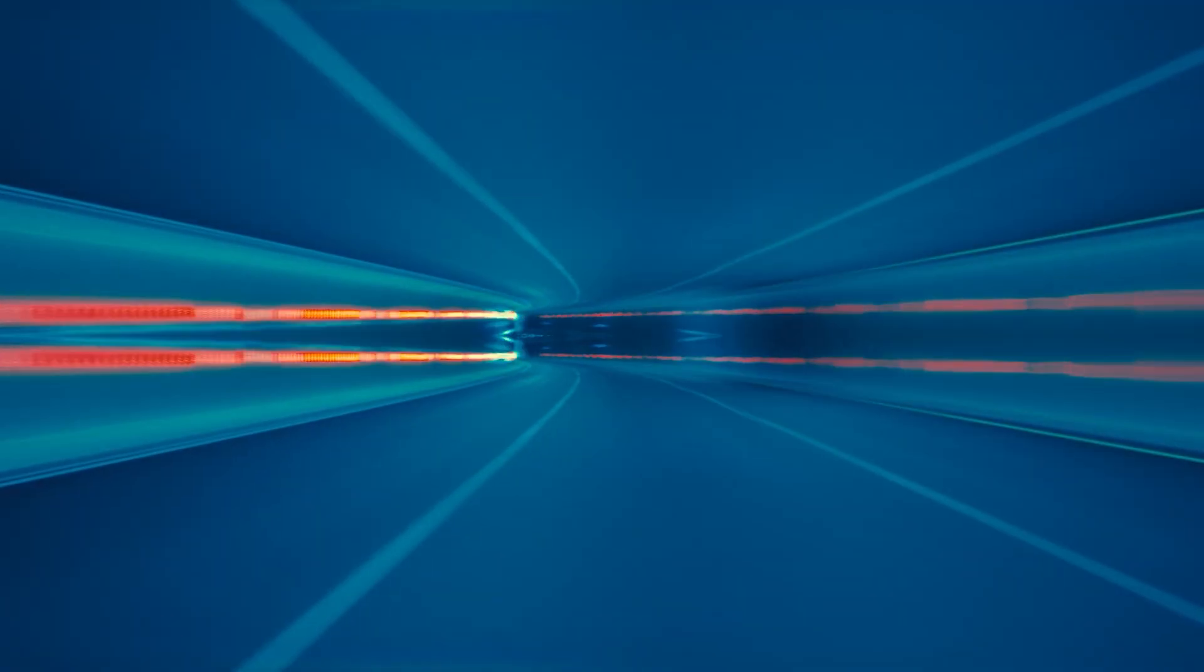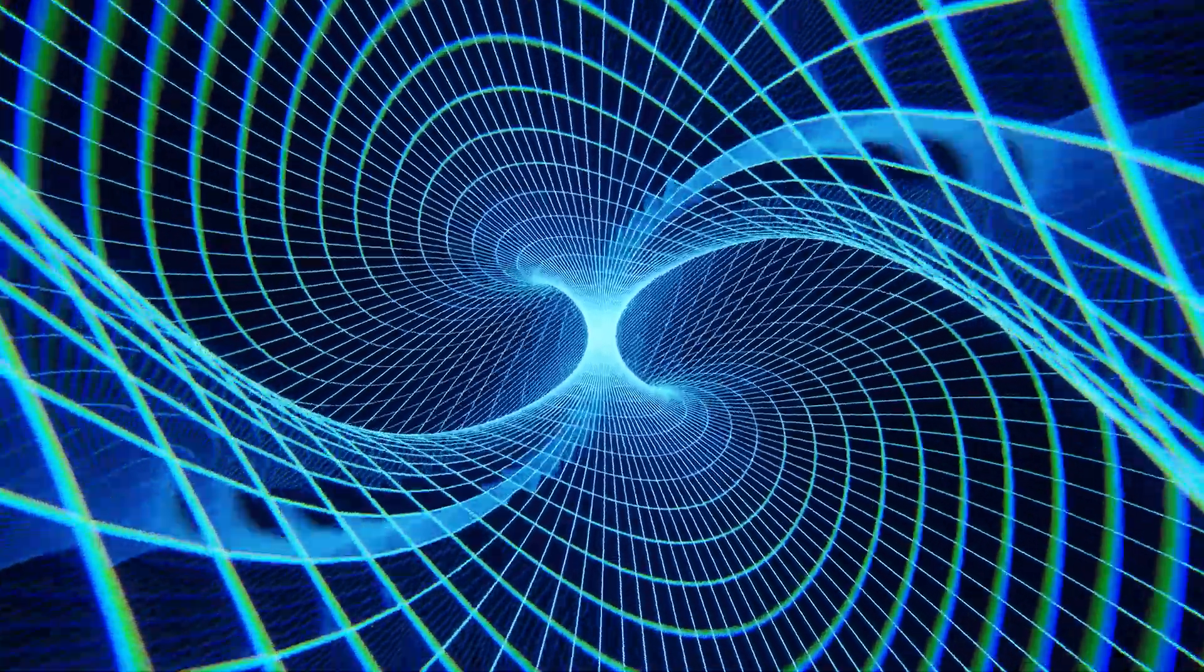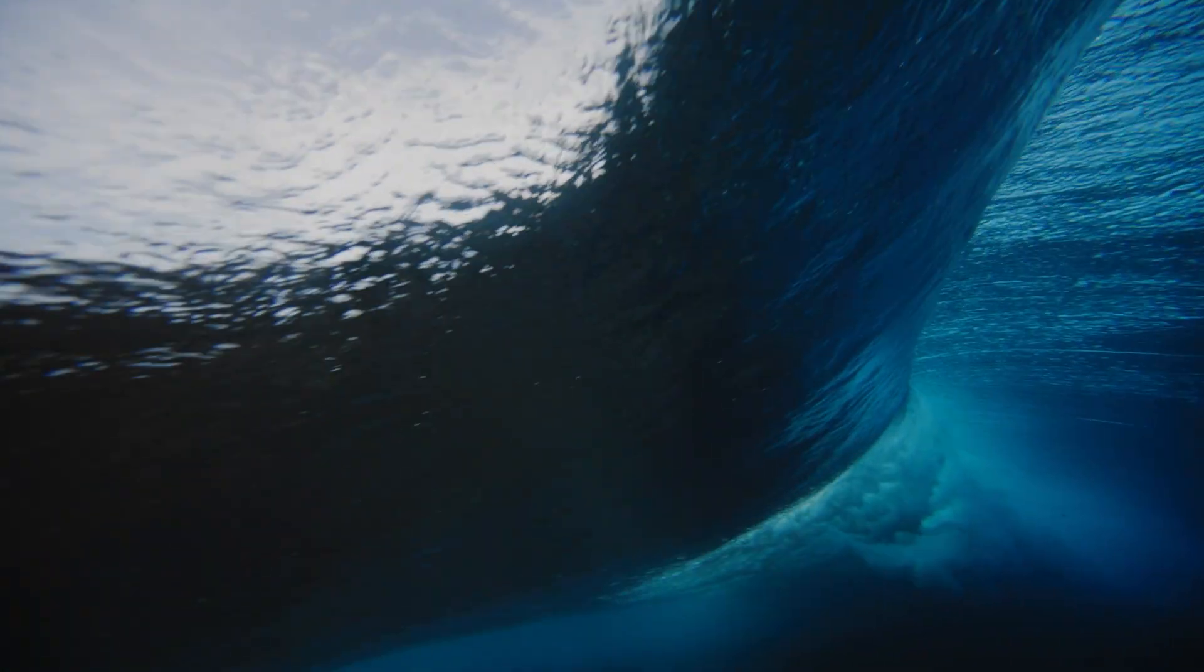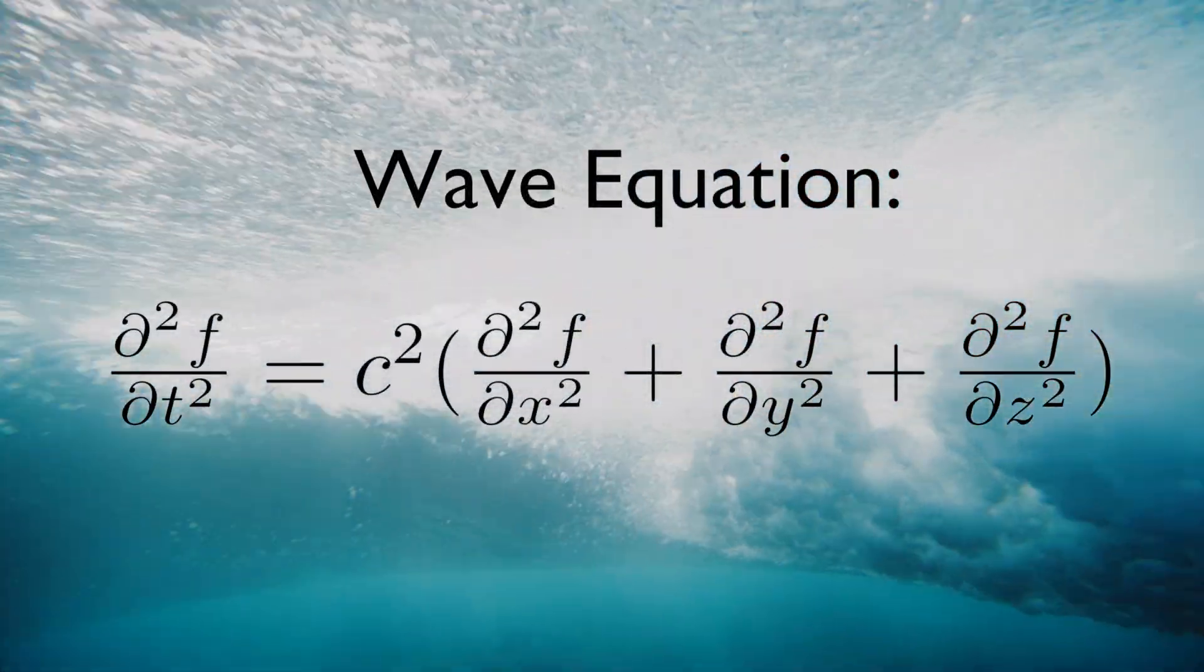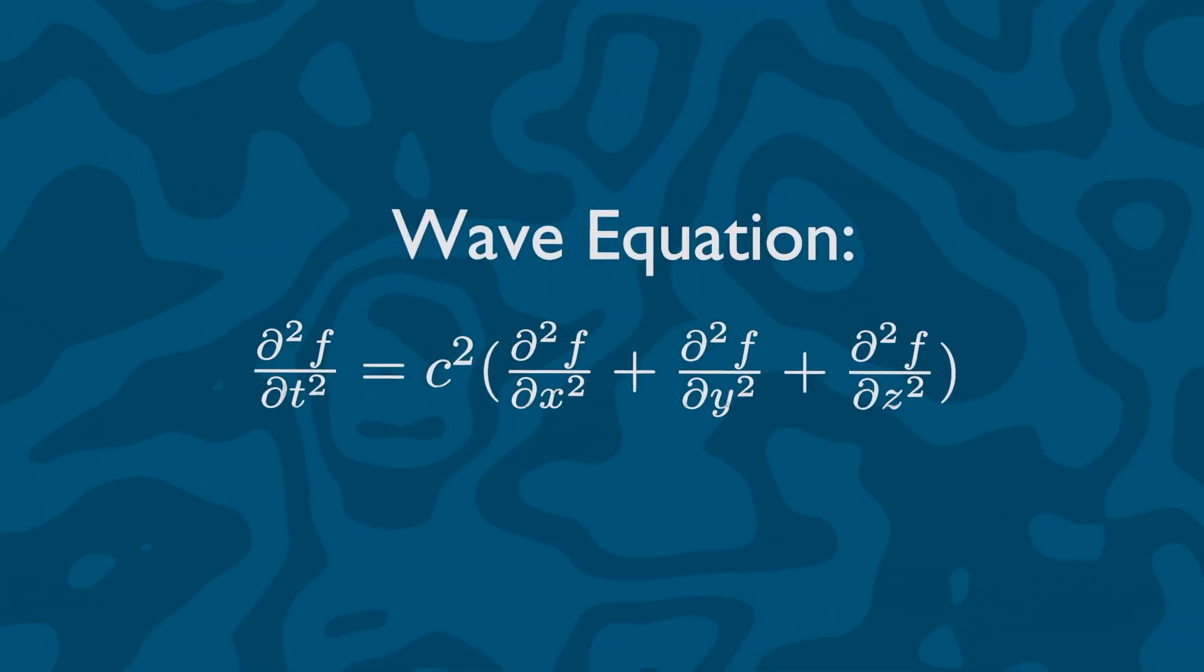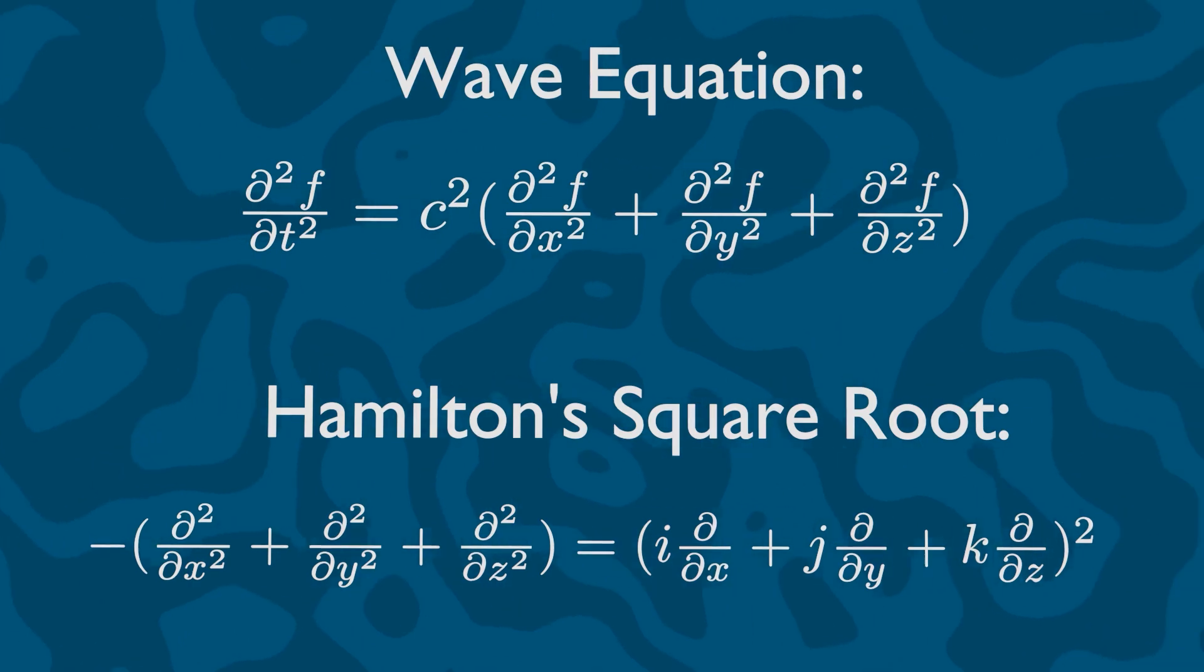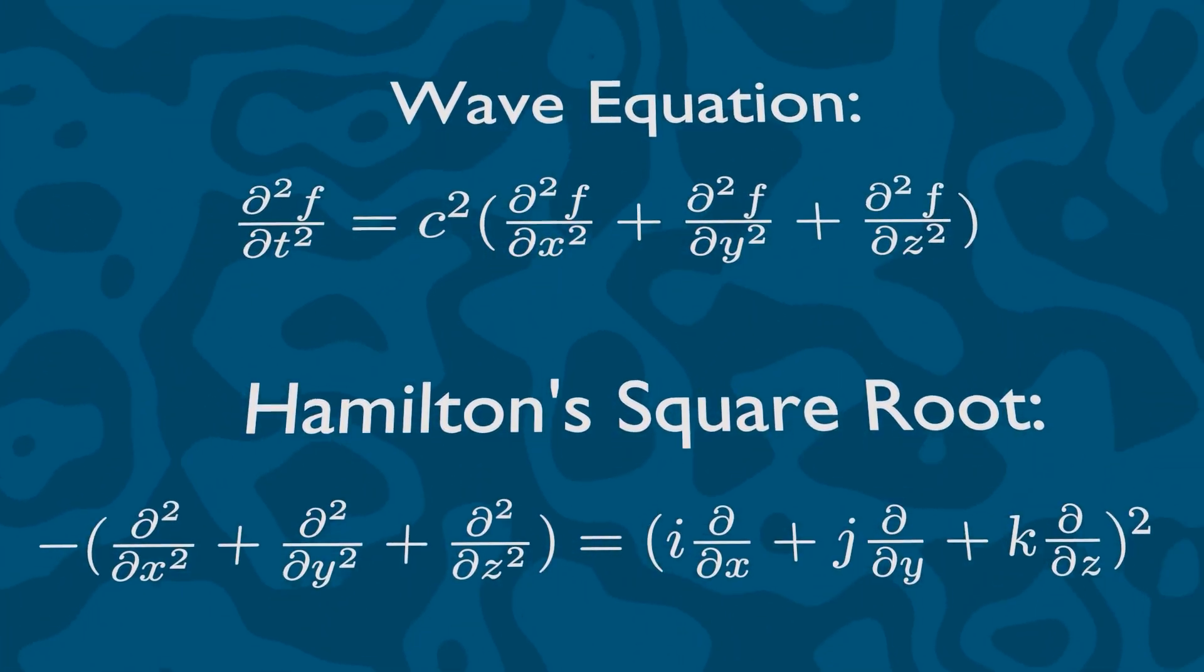But Hamilton wanted to go further. He wanted to apply his new quaternionic numbers to physics. There is a famous differential equation in physics called the wave equation that pops up all over the natural world. It looks something like this. Now, what Hamilton realized was that his quaternionic numbers gave him a way to take the square root of part of the wave equation, just like this. Hamilton himself wrote down this observation and even said he believed that it would be important for physics one day in the future, but he couldn't tell for what.